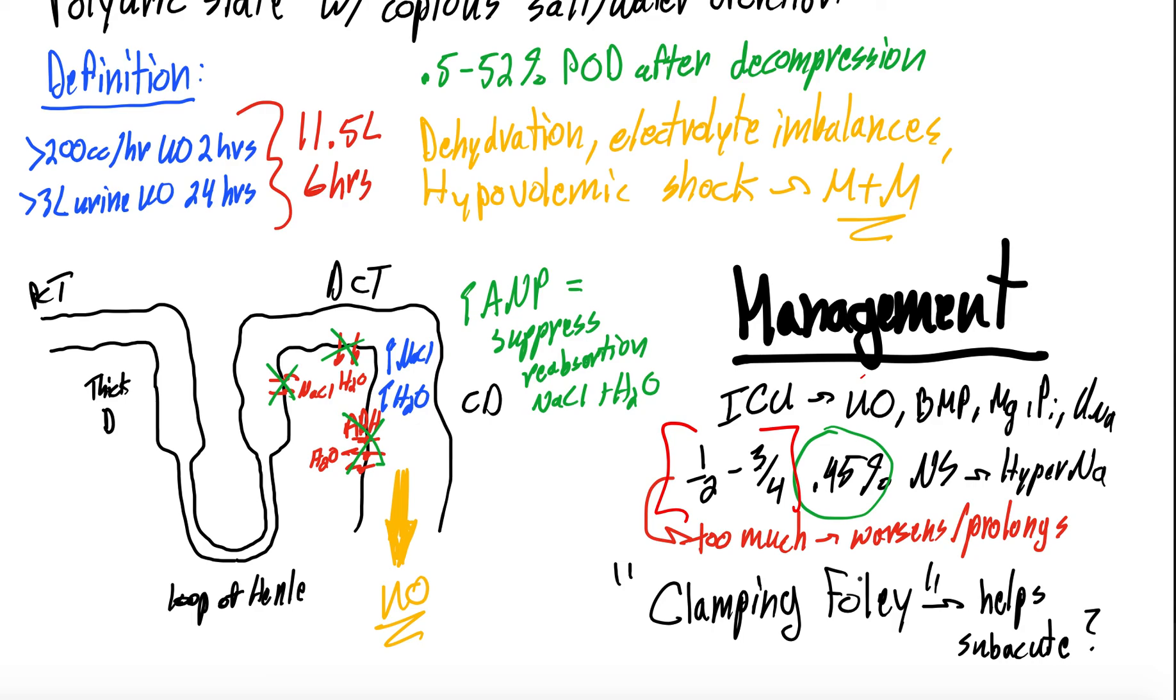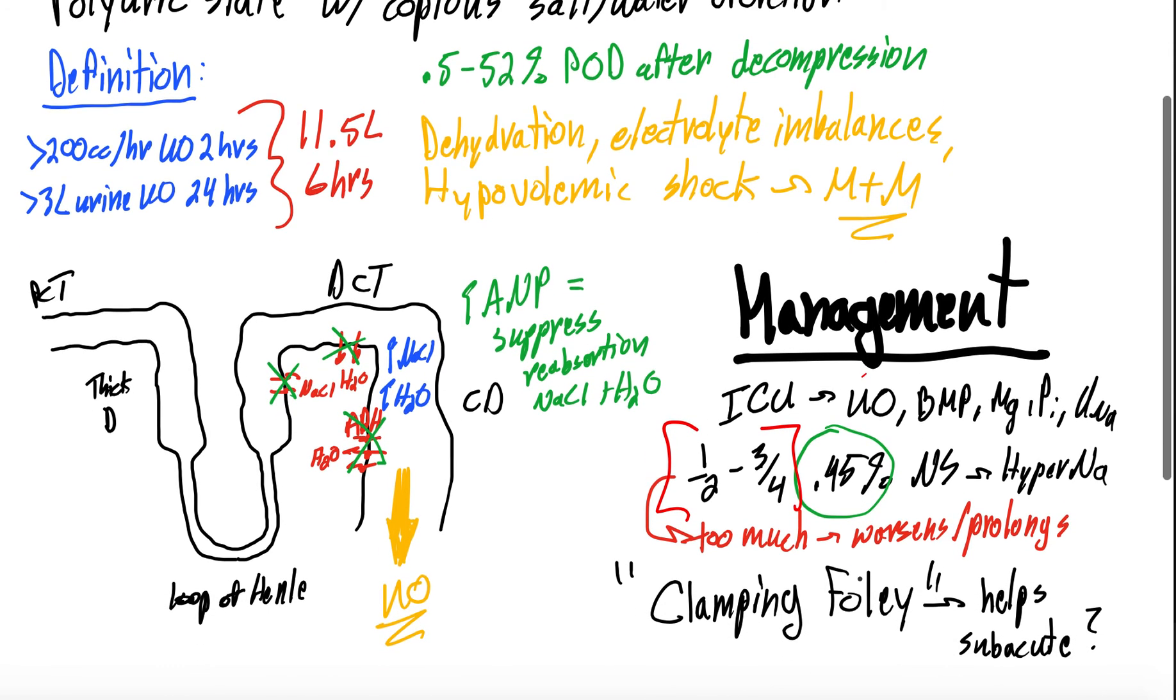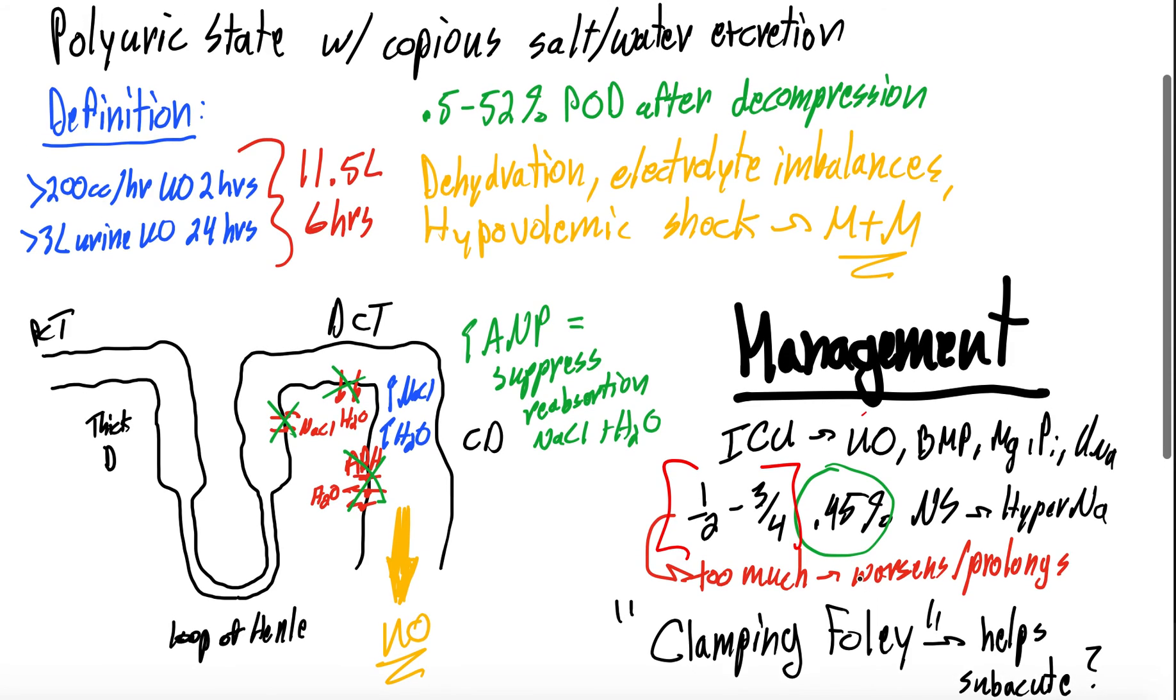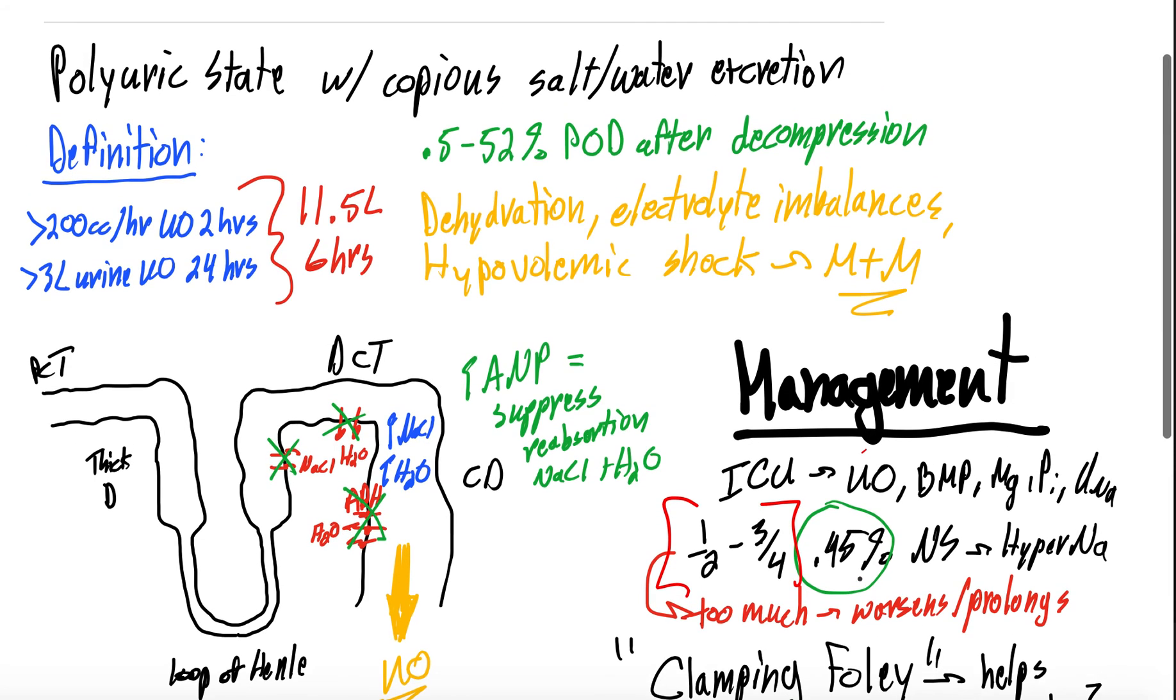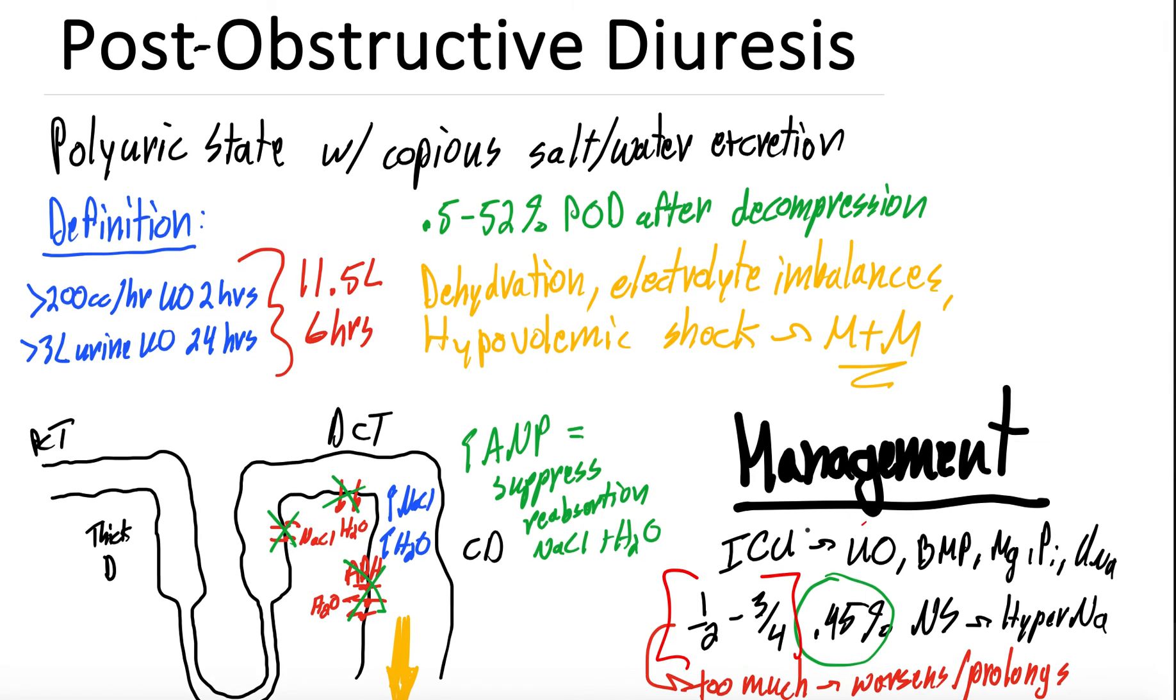So interesting case. Again, check out that case conference number one, as well as the obstructive uropathy video. And then this is the management of a really interesting complication of post-obstructive diuresis. The patient that we had that we talked about in the case conference went to the intensive care unit, continued to have significant diuresis, urinating huge volumes for like a day or two. They did get a little hypernatremic as well. All that was fixed. Our nephrologist did recommend some intermittent clamping since they were still having high volumes. They eventually were transitioned from the intensive care unit to the floor and sent home in a couple of days and they did okay.